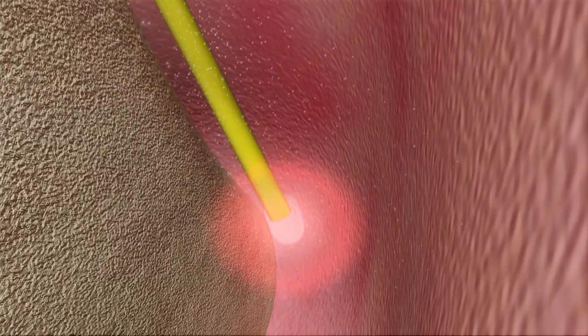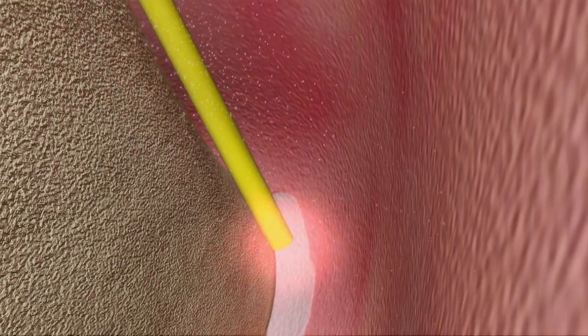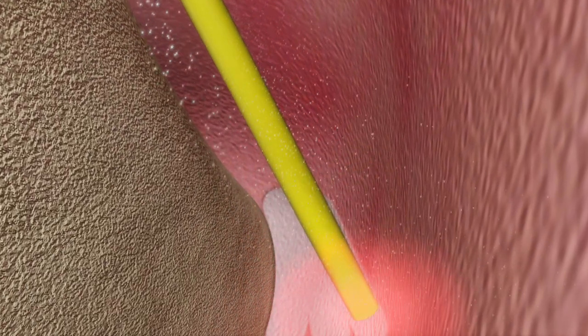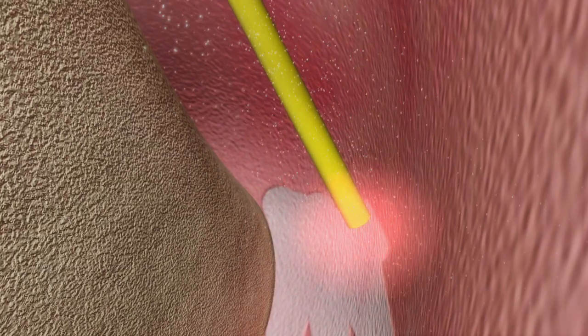The Erbium YAG laser is then used to dissect the periodontal attachment from the bottom of the pocket to the bone. This is necessary to stimulate the regenerative factors from the bone that will help with healing in the periodontal defect.